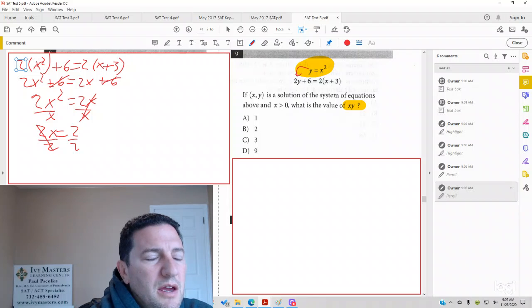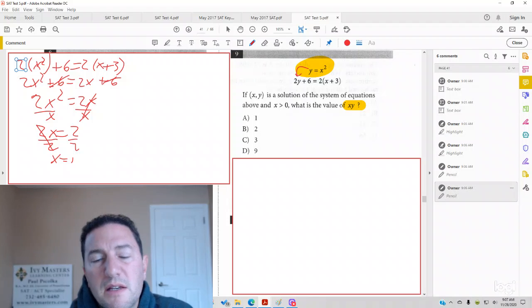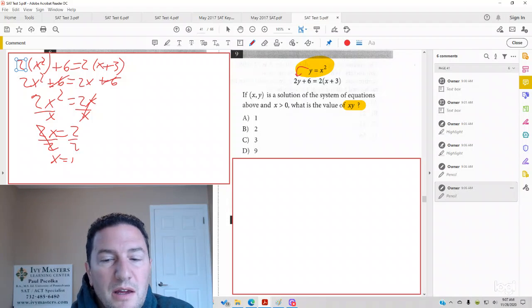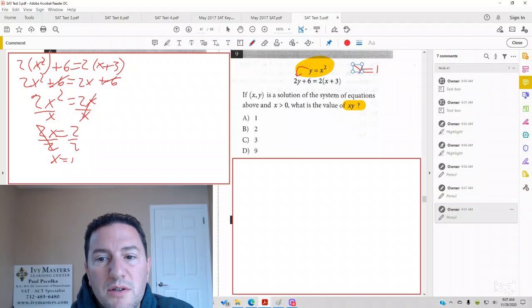2s cancel on the left. x equals 2 over 2. 2 over 2 is 1. So, x equals 1. Now, keep in mind, it's asking you for xy. So, we've got to say y equals 1 squared. So, y equals 1 as well.